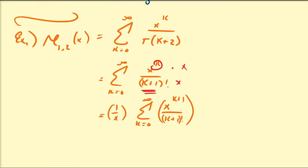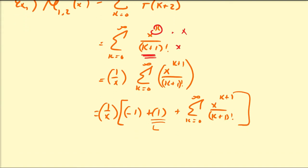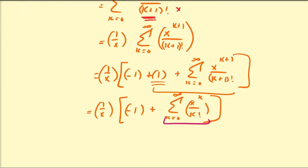We can shift the index by noting that the sum from k=0 to infinity of x^(k+1)/(k+1)! starts at x^1/1!, x^2/2!, and so on — meaning the k=0 term of the full exponential series x^0/0! is missing. So we can write this as 1/x times negative 1 plus the sum from k=0 to infinity of x^k over k factorial.